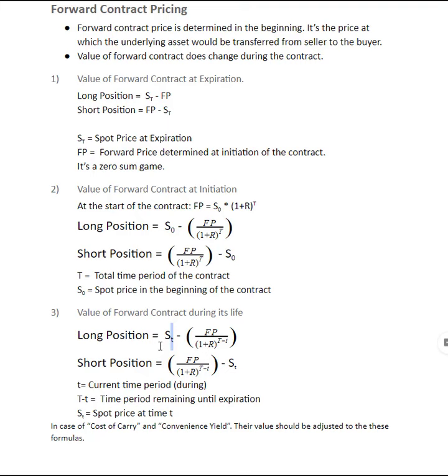So we take the spot price at time t here, and we subtract the present value for the time period capital T minus small t, which is the time period remaining until the expiration.